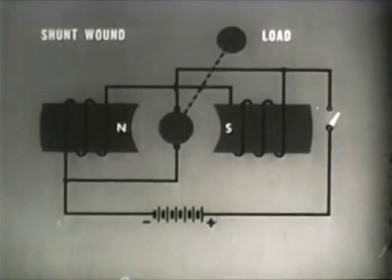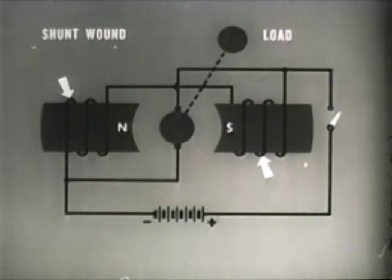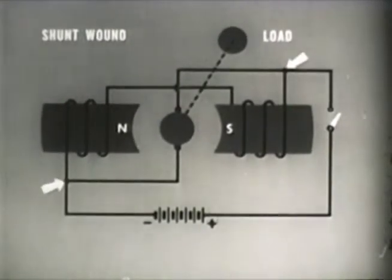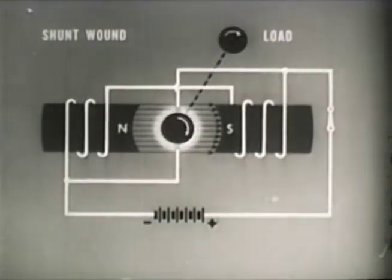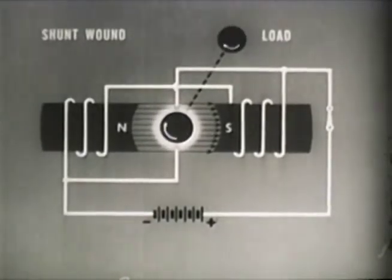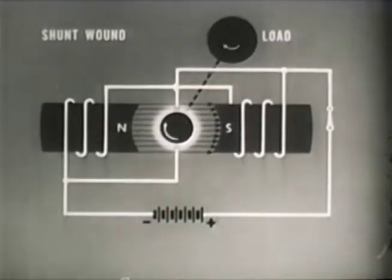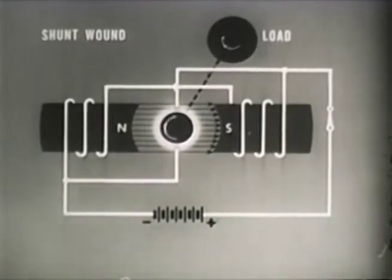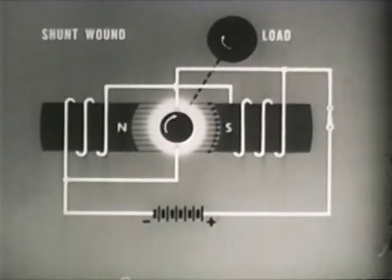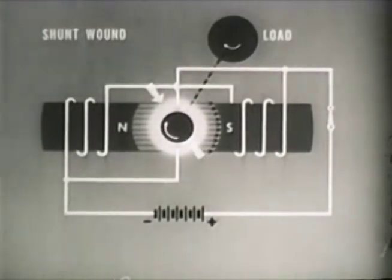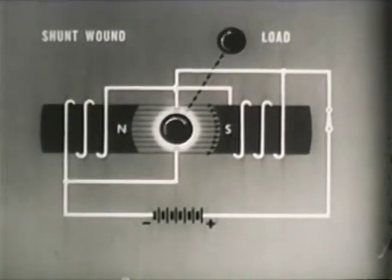The shunt wound motor has less starting torque, but it is less dependent on load for speed control. In the shunt wound motor, the field coils are connected in parallel directly across the DC input terminals. The starting torque is not as great as in the series motor, since field strength is not affected by armature current. The speed of a shunt motor is fairly constant under conditions of changing load. As more load is applied, the speed of the armature decreases, which decreases the CEMF and increases the current input. The increase in current input boosts the coupling between the field and armature and increases the torque, causing the motor to resume approximate running speed. A sudden reduction in load will not damage the motor because the field current is independent of rotor current in the shunt wound motor.